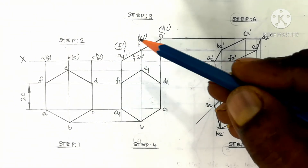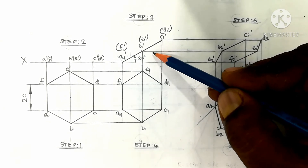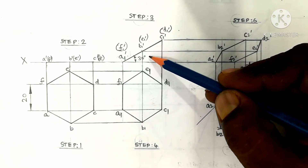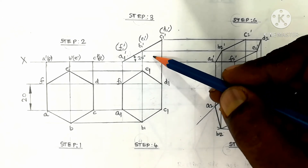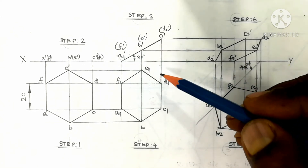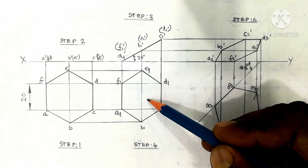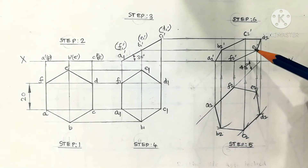Step 3 deals with the surface inclination. The surface of the hexagonal lamina is inclined at 30 degrees to the HP. The angle of 30 degrees will appear above the hexagonal shape based on the straightened concept. That gives us the corresponding top view — the surface inclination is reflected in the top view. Then we proceed to the final position.